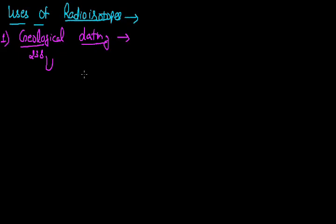Geological dating is based on the principle that all rocks and Earth particles contain the radioactive isotope of uranium, that is uranium-238. With time, this disintegrates, and the stable end product of this decay series is the stable isotope of lead, that is lead-206. By considering the amount of uranium left and the amount of stable lead formed, we can find out the age of the rock.